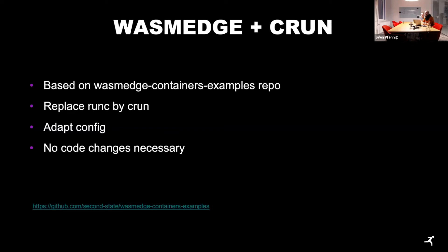The idea is exactly the same as with Krustlet, but based on the example repository, we take our kind node and replace runc with crun. We need to adapt the config a bit, but we don't have any code changes to kind — so we can use a standard kind installation. We can have lots of different workloads on the same node as regular OCI containers.